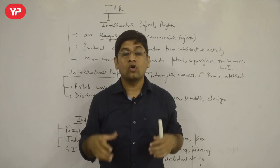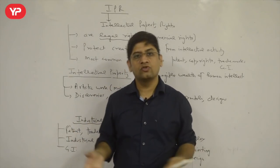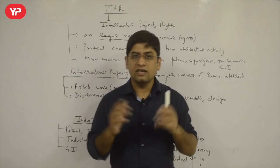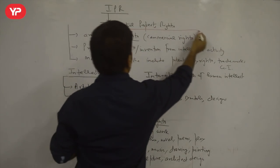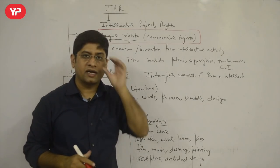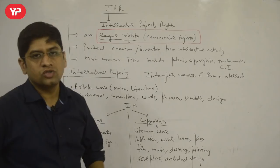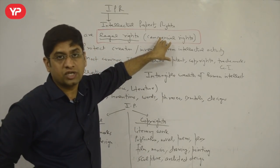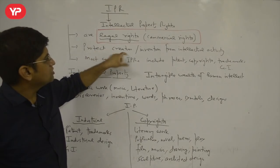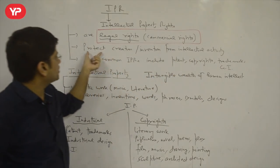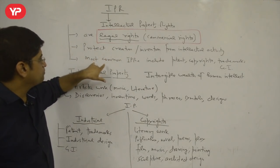If there is no protection, I will not be motivated to produce something new intellectually. Now, IPR is a legal right as well as a commercial right — always remember this. It is your legal right; there is a law against violation. So if someone violates your IPR, you can legally sue them. Monetary benefit is also associated with it — whatever you create, you can sell it. It protects your creation and invention from your intellectual activity.